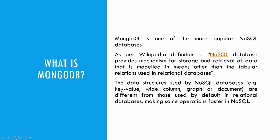So what is MongoDB and what is a NoSQL database? As per the Wikipedia definition, a NoSQL database provides a mechanism for storage and retrieval of data that is modeled in means other than the tabular relations used in relational databases. So far we have talked about Microsoft SQL databases, and there are others like MySQL and Oracle, but they are all relational databases. We are going to see what a non-relational database looks like.